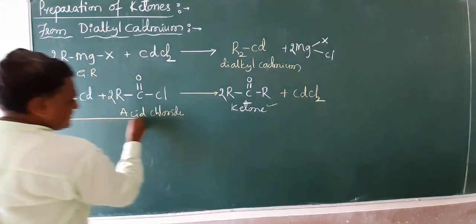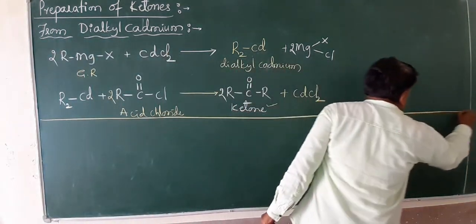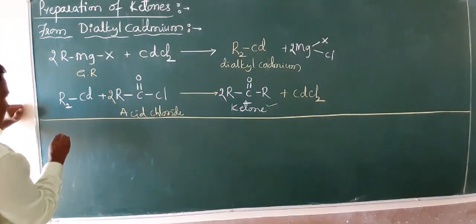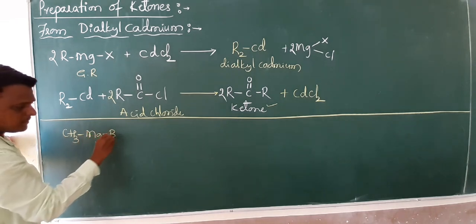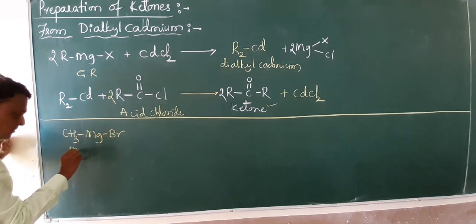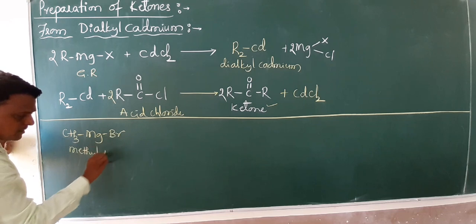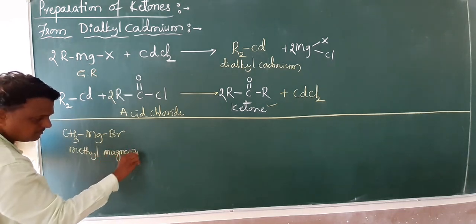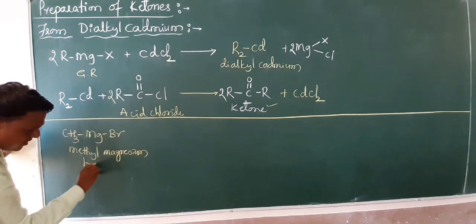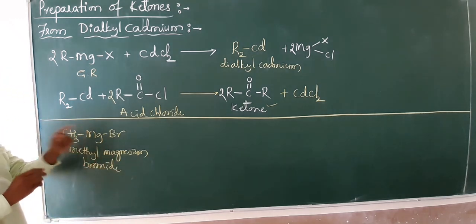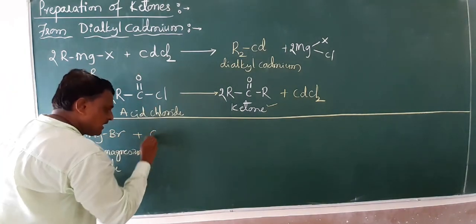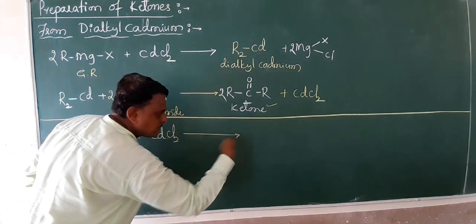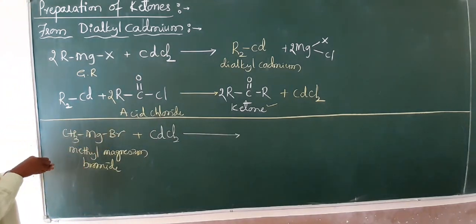If you want an example, we have a Grignard reagent, CH3MgBr. Name: methyl magnesium bromide. Methyl magnesium bromide reacts with your cadmium chloride, CdCl2, with 2 moles. Because 2 Cl, here is the 2 moles. This is the loss of salt with the 2 moles of MgBrCl.